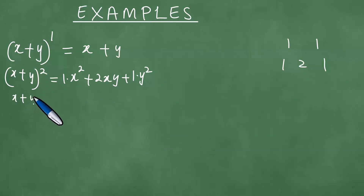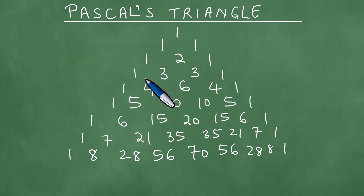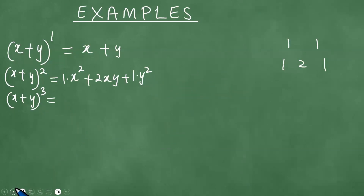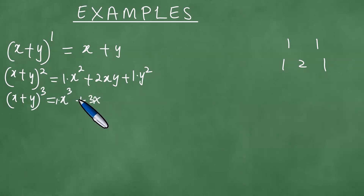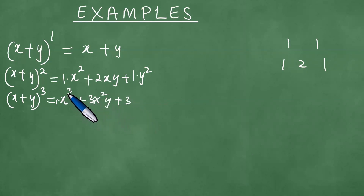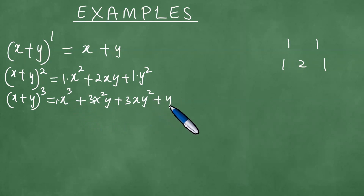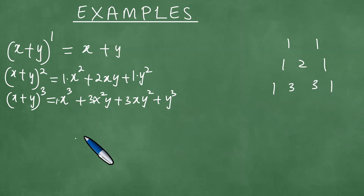Then we have x plus y to the third power, which uses the row 1, 3, 3, 1. If you cube this, you get x cubed, plus 3x squared y, plus 3xy squared, plus y cubed. The powers of x decrease from 3 to 0 and the powers of y increase from 0 to 3. This corresponds to the 1, 3, 3, 1 row of Pascal's Triangle.